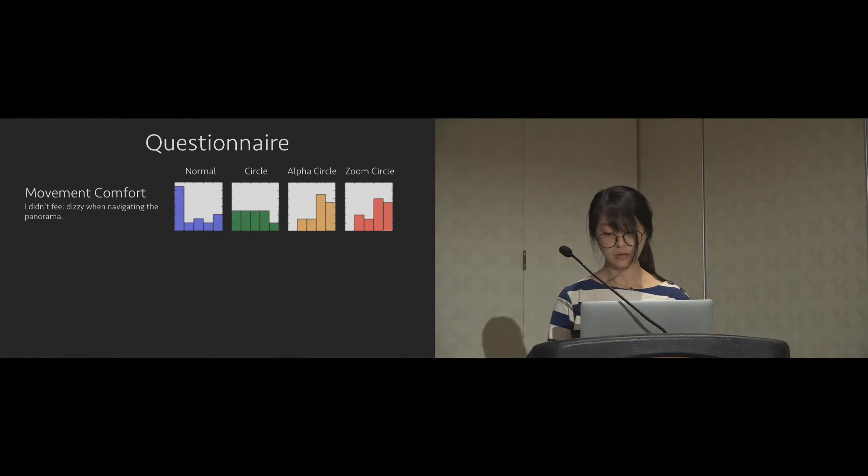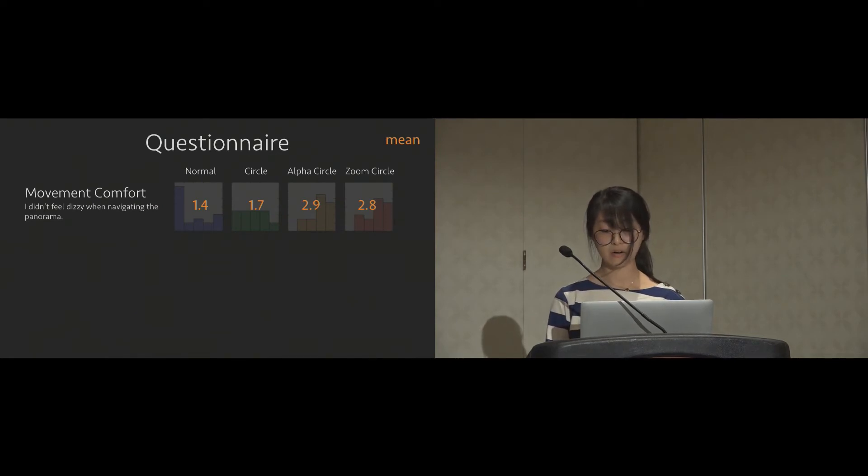We also collect several qualitative data by a questionnaire. The score ranged on a Likert scale from one meaning bad to five meaning excellent. One of the aspects we are concerned about is whether subjects experience motion sickness as using these interfaces. From the histogram and the mean scores showing here, we know that narrowing the field of view slightly improves the movement comfort while adapting transparency or zoom level with panning speed significantly helps reduce motion sickness.